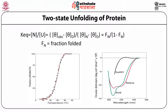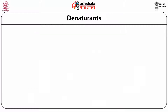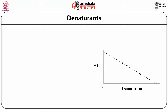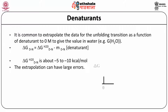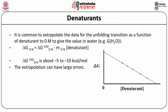To estimate protein stability in terms of delta G, it is common to extrapolate unfolding transition data as a function of denaturant concentration to 0 molar, giving the delta G value in water (delta G°water). Delta G°water equals delta G minus m times the denaturant concentration, and the value is approximately -5 to -10 kcal/mol. However, some error may occur due to the method of extrapolation.